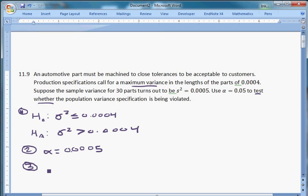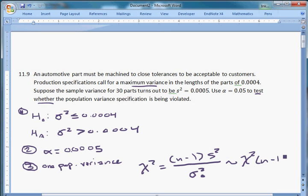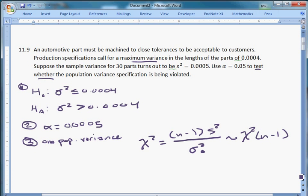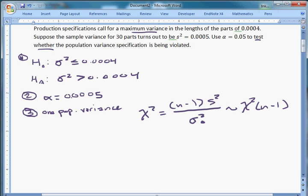Step three is to choose a test statistic. We have one population variance that we care about. One sample. We have one population variance, and our test statistic for variances or standard deviations looks like this. Chi-squared equals n-1 times s-squared over the variance under the null, sigma-squared 0. And under the null, this test statistic is distributed chi-squared with n-1 degrees of freedom.